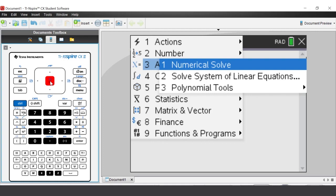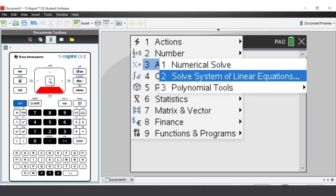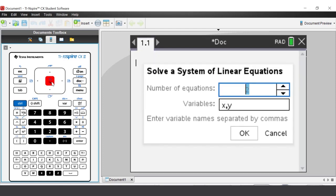Select solve system of linear equations by using the down arrow and pressing ENTER. The pop-up window shows that the default is two equations with two variables X and Y separated by a comma.